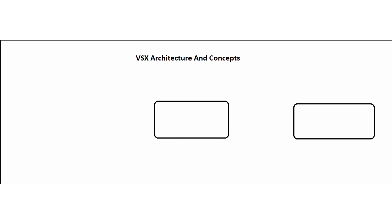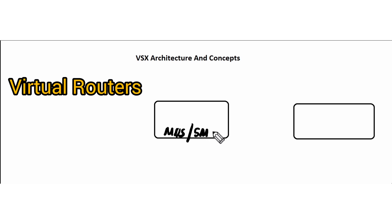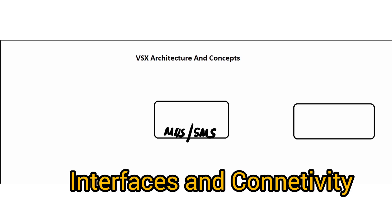Number one, we are going to talk about the complete end-to-end architecture where we have a VSX gateway, communication with the management server, we have virtual systems, we have virtual routers, we have virtual switches and the interfaces and the connectivity that come with them.